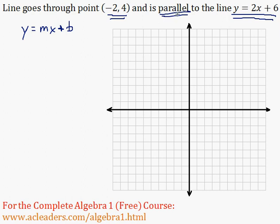Lines that are parallel have the same slope, so that means that our m is just going to be 2, since the slope of this line is just 2. So let me write that down over here.